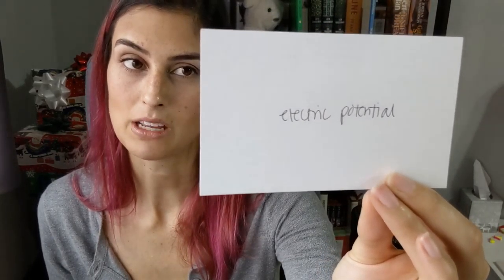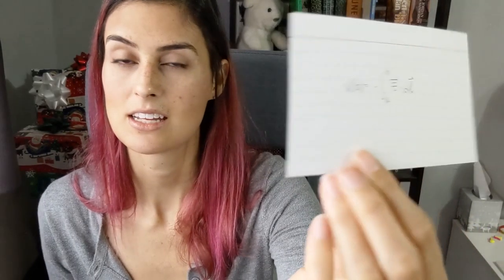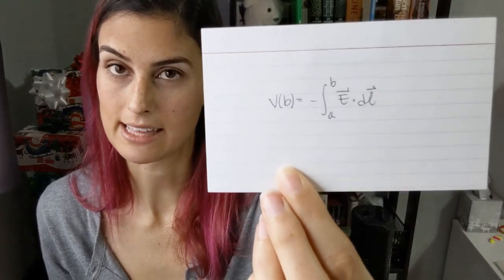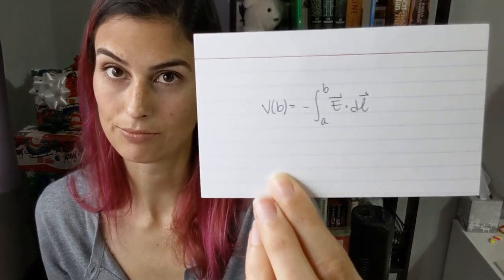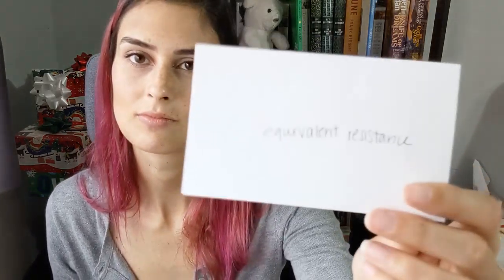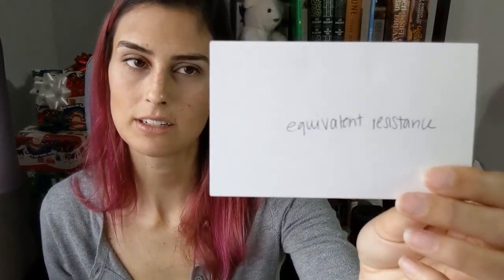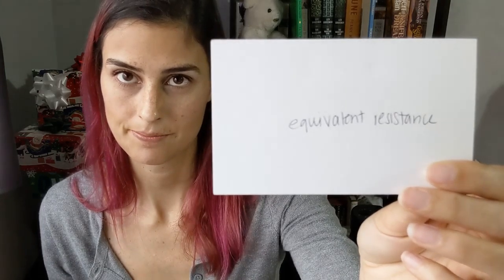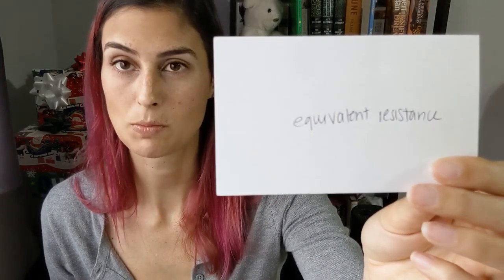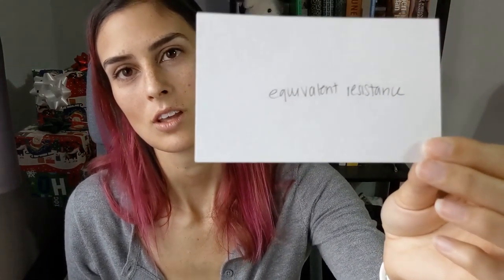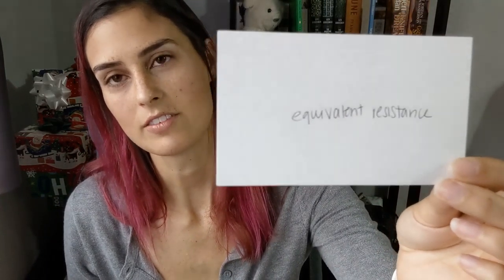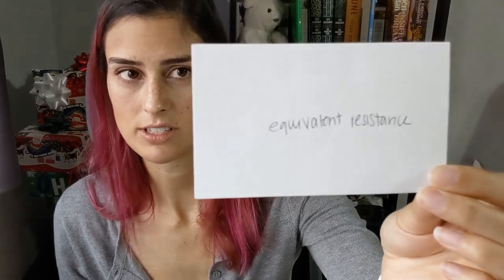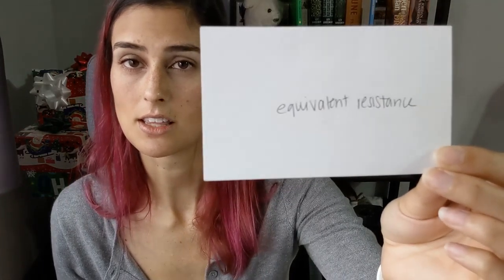Electric potential: V at point B equals the negative integral from A to B of E dot dl — the line integral. Equivalent resistance for multiple resistors: if they are in series, the equivalent resistance is just the sum of the individual resistances.